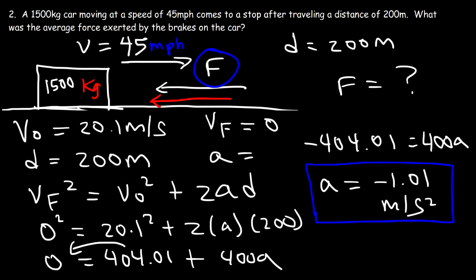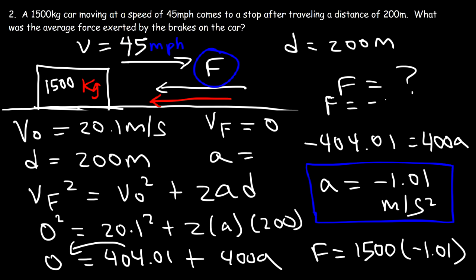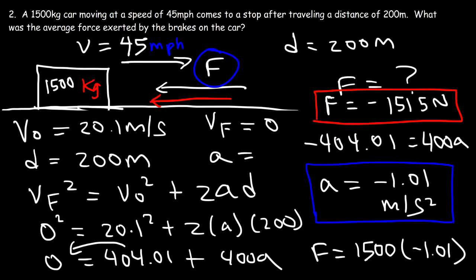The acceleration is negative because the object is slowing down — the force is directed towards the left, so the acceleration is also towards the left. Now that we have the acceleration, we can calculate the average force: F = MA = 1500 kilograms times negative 1.01 = negative 1515 newtons. It's negative because it's directed towards the left, slowing the car to a stop. That's it for this video on Newton's second law, F = MA.